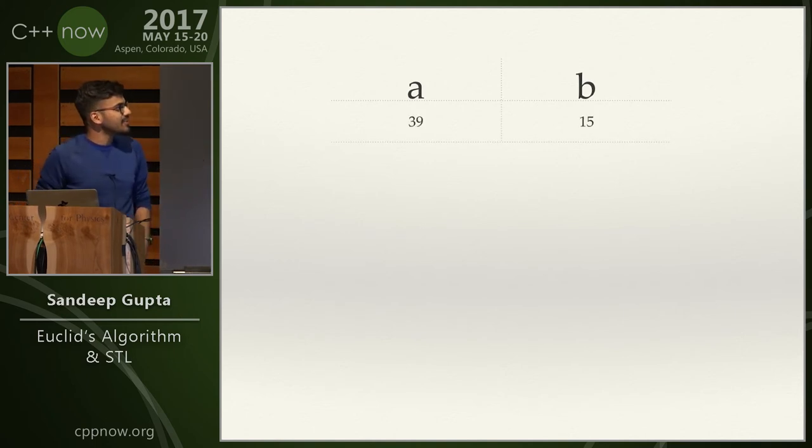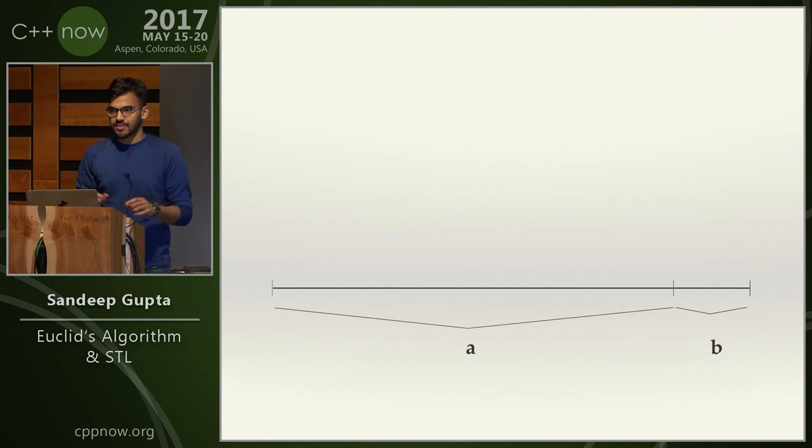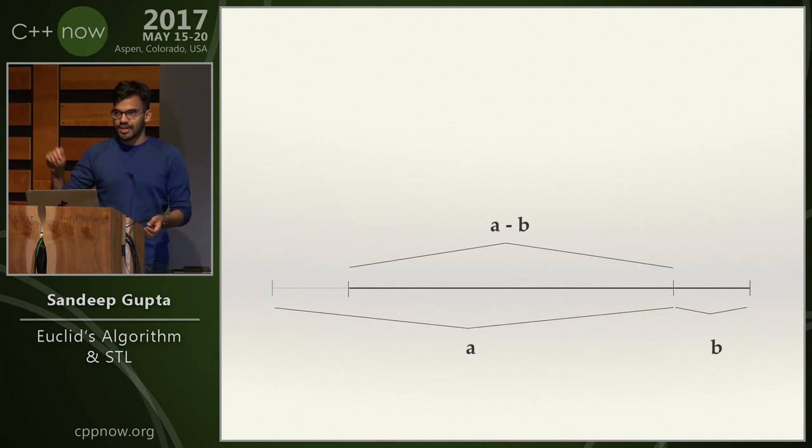So if you have two numbers, 39 and 15, what's the GCD, by the way? 3. Alright, that's it. So instead of just imagining them as two numbers, let's imagine there are two adjacent line segments. And what we are essentially doing is we are subtracting the smaller line segment from the larger one. And we'll stop when the two line segments are equal.